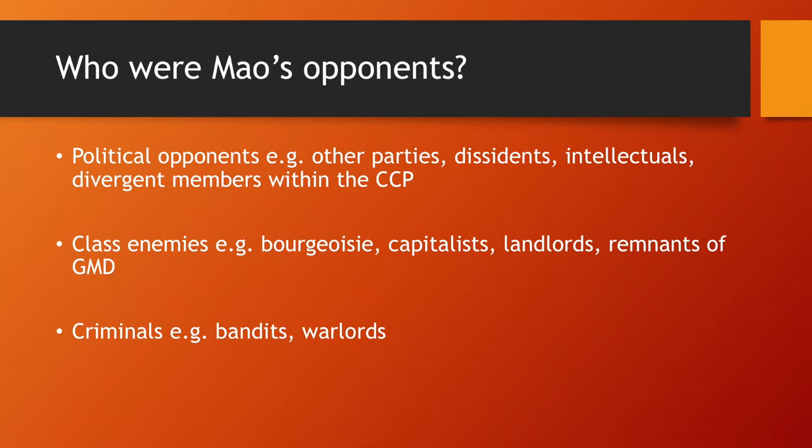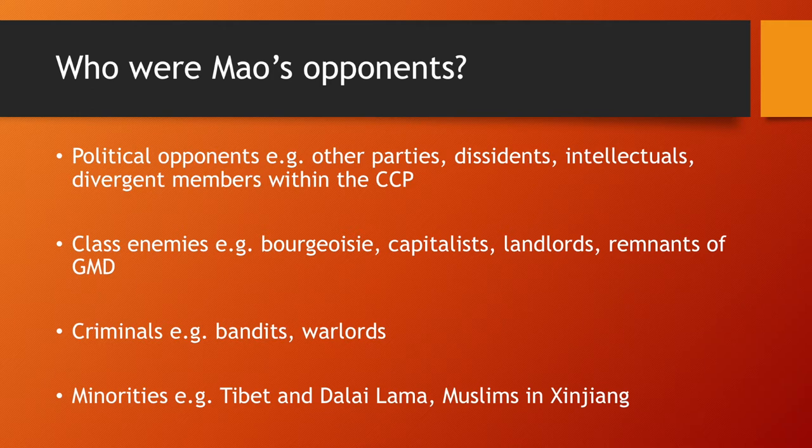Criminals such as bandits and warlords — what Mao had on his hands was a decentralized form of control, with warlords mainly controlling their local areas, creating a period of instability he had to rectify. And minorities, specifically religious minorities like the Buddhists in Tibet and the Muslims in Xinjiang.